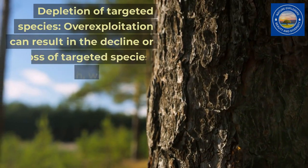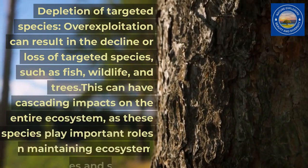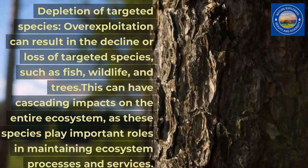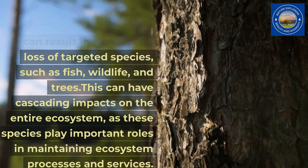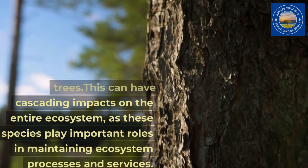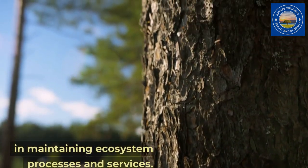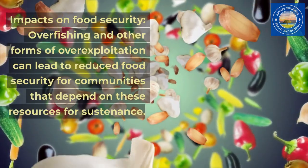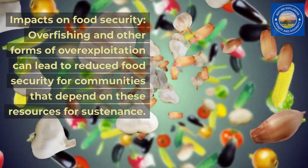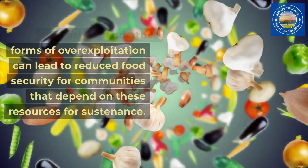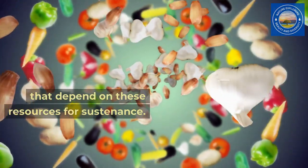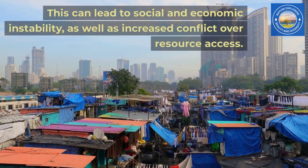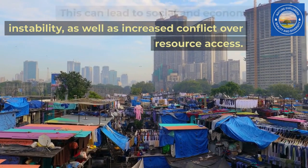Over-exploitation can result in the decline or loss of targeted species, such as fish, wildlife, and trees. This can have cascading impacts on the entire ecosystem, as these species play important roles in maintaining ecosystem processes and services. Over-fishing and other forms of over-exploitation can lead to reduced food security for communities that depend on these resources for sustenance, leading to social and economic instability, as well as increased conflict over resource access.